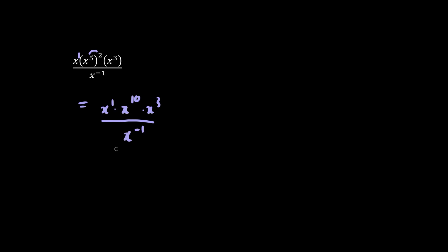And on the denominator, we have x to the minus 1. We have the same base, so we can add these exponents. What is 1 plus 10 plus 3? 11 plus 3 is 14. So we have x to the 14 divided by x to the minus 1.